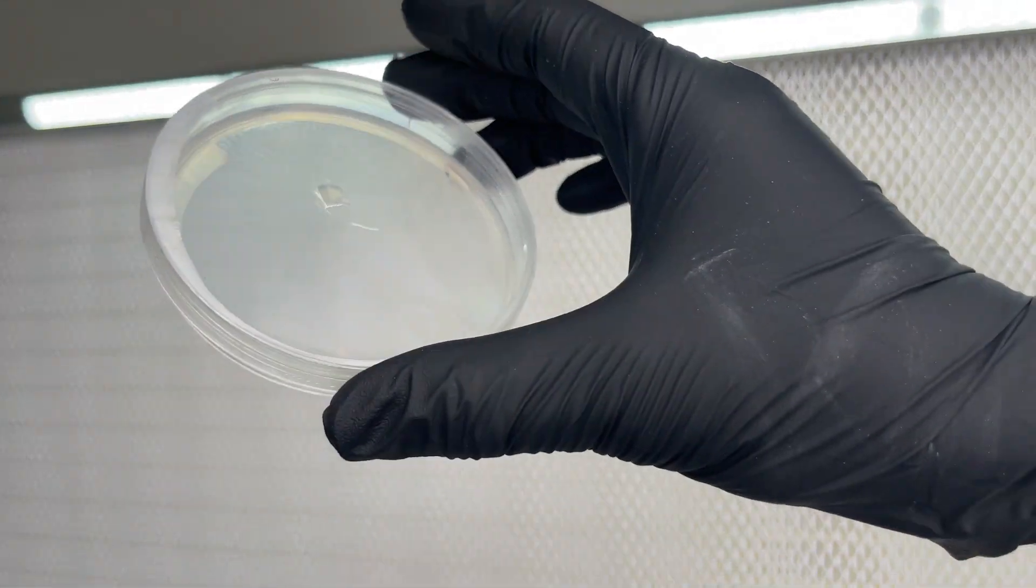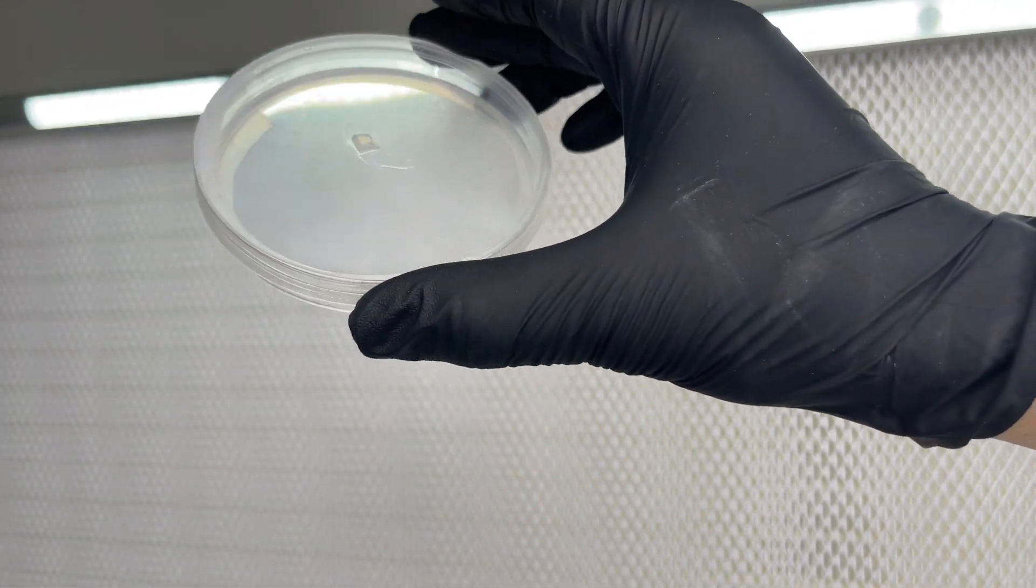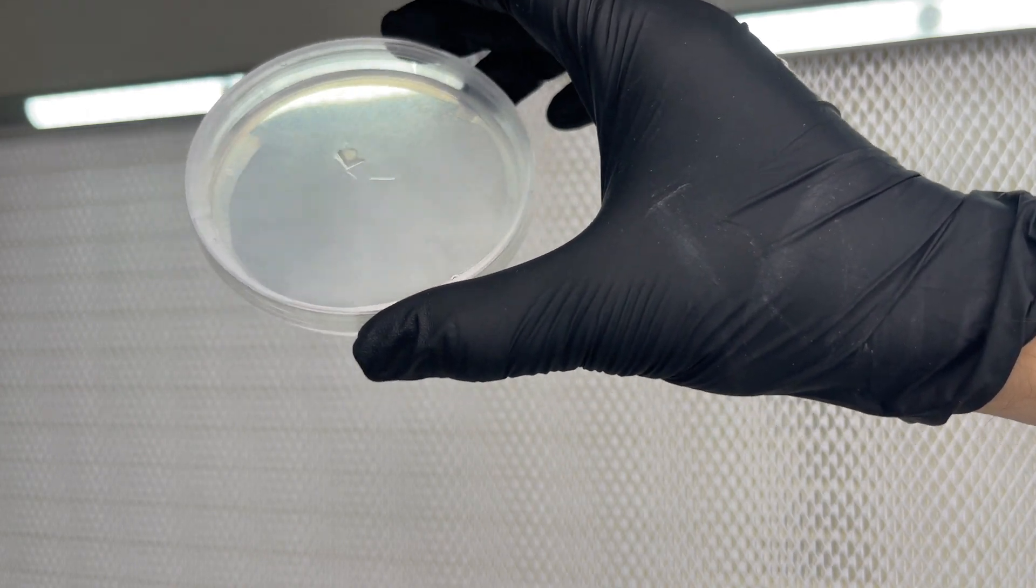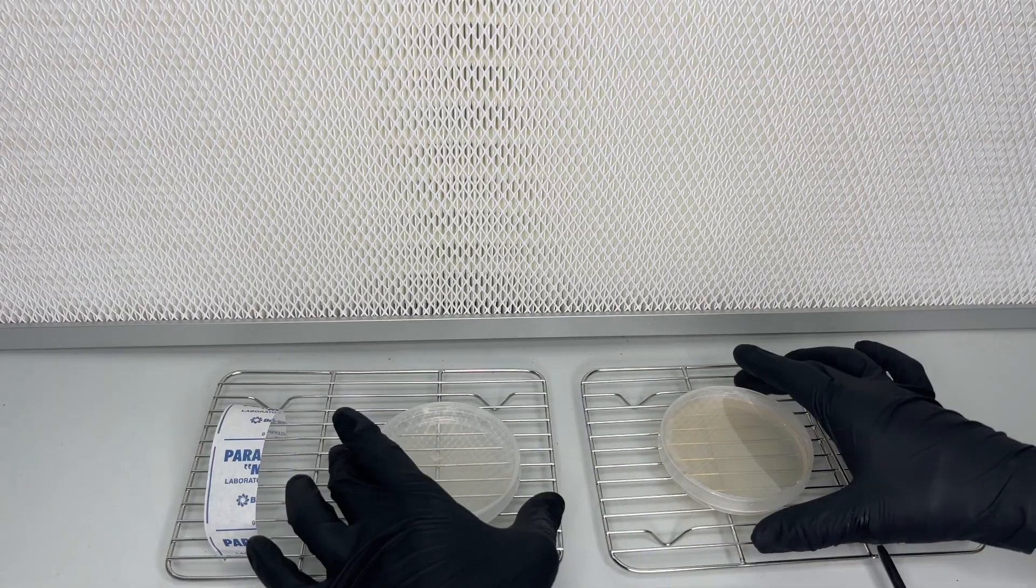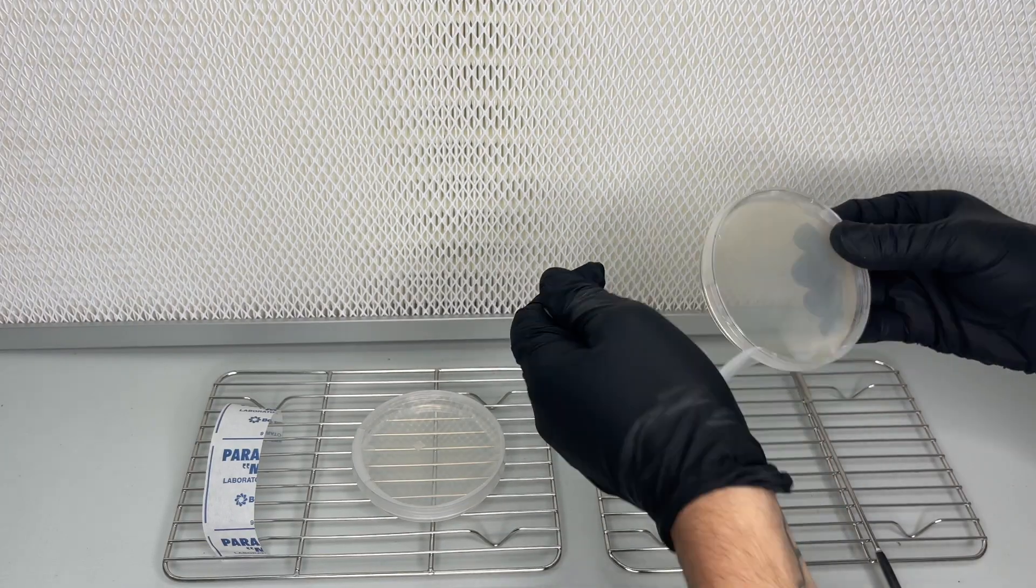After about one week of growing, you can see the thin mycelium on the water agar plate. We can no longer see any orange bacteria, so that's a good sign.